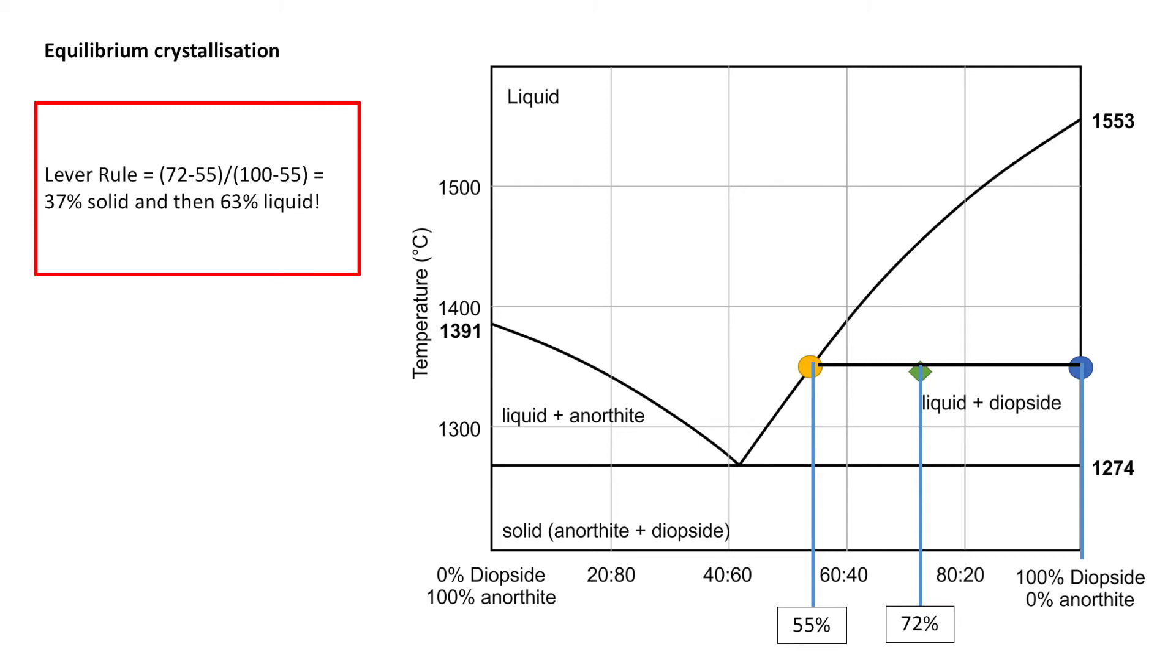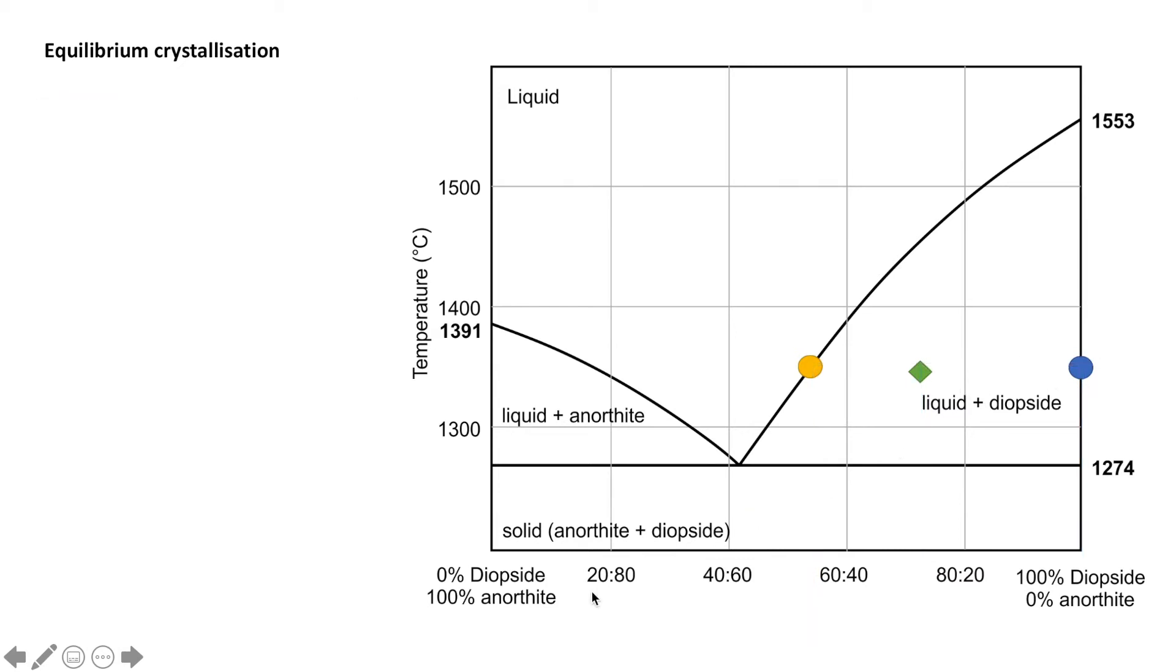So we draw the lines down, see where they intersect, apply the lever rule equation. So it looks like right there we have 37% solid, represented by this arm over here, and 63% liquid, represented by this arm here.